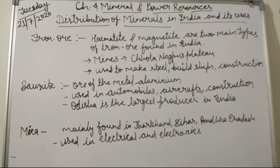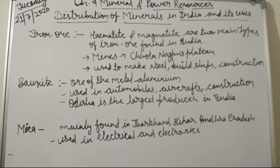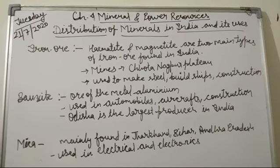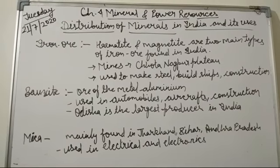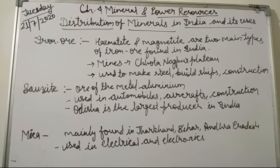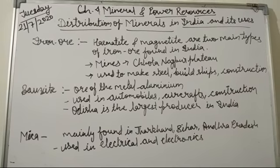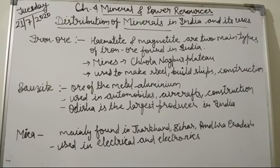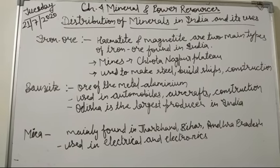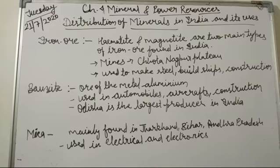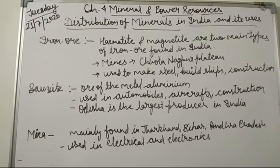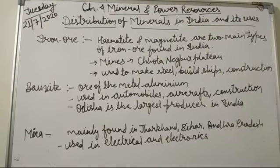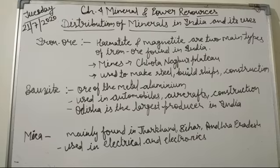The next mineral is bauxite, the ore of aluminium. It is mainly used in automobiles and aircraft. It is also used in industries like construction, furniture and fittings, and kitchenware. Odisha is the largest producer of bauxite in India. Other bauxite producing areas include Jharkhand, Chhattisgarh, Madhya Pradesh, Gujarat, Maharashtra and Tamil Nadu.